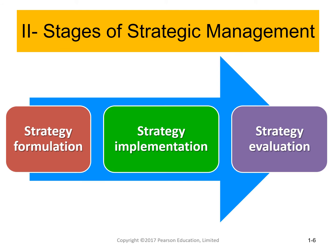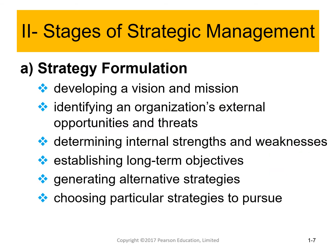The stages of strategic management are strategy formulation, implementation, and evaluation. Strategy formulation focuses on several points: first, developing the vision and mission, then identifying the internal and external situation of the organization. Internal focuses on strengths and weaknesses; external focuses on opportunities and threats. After understanding the current situation, we set long-term objectives, then identify different strategy options and choose the best one.